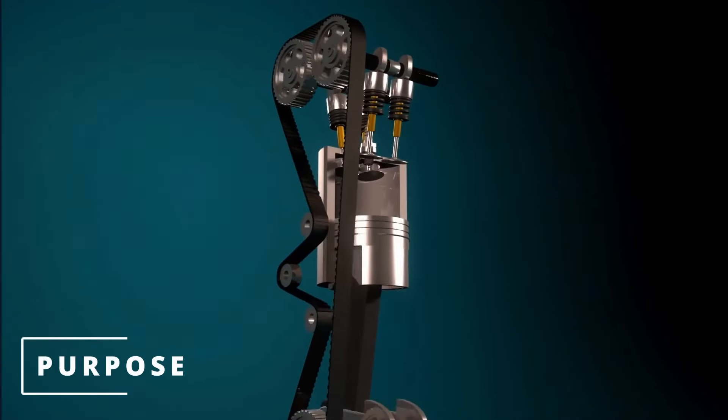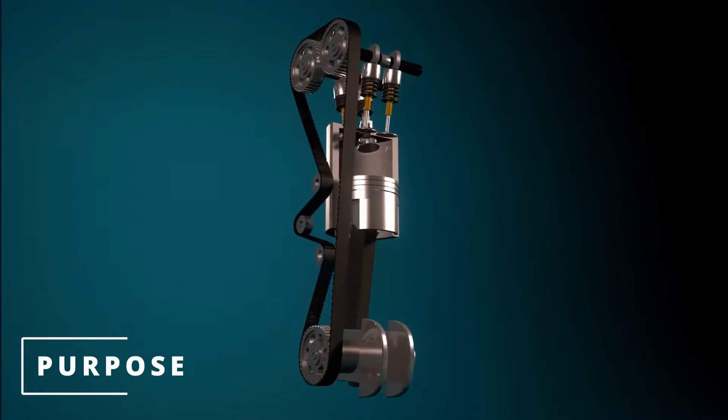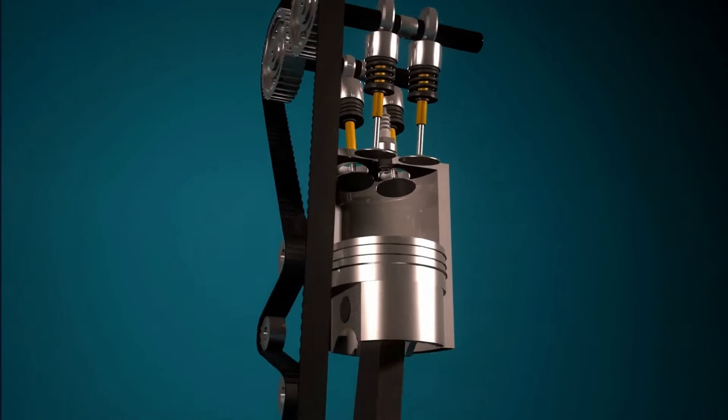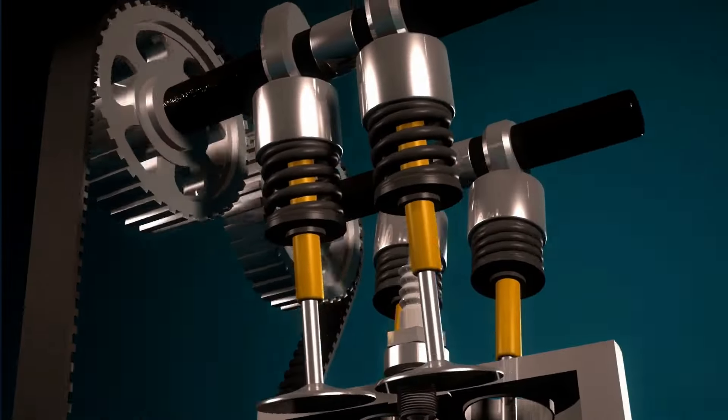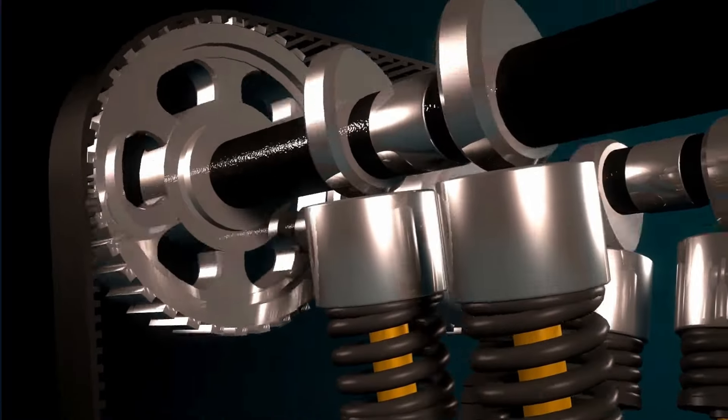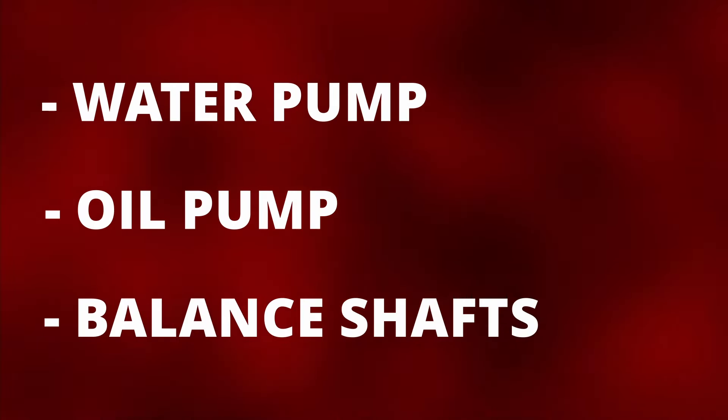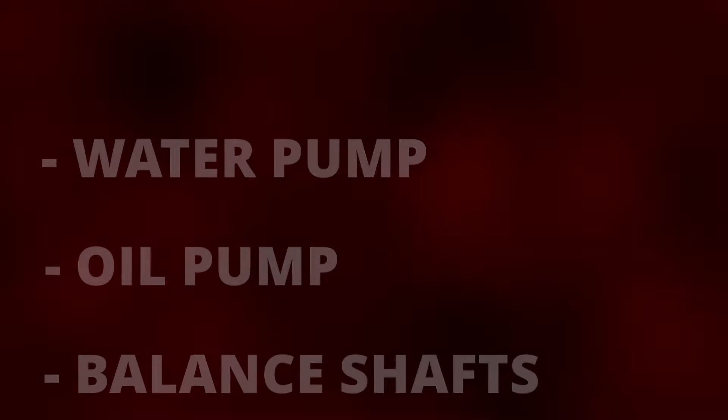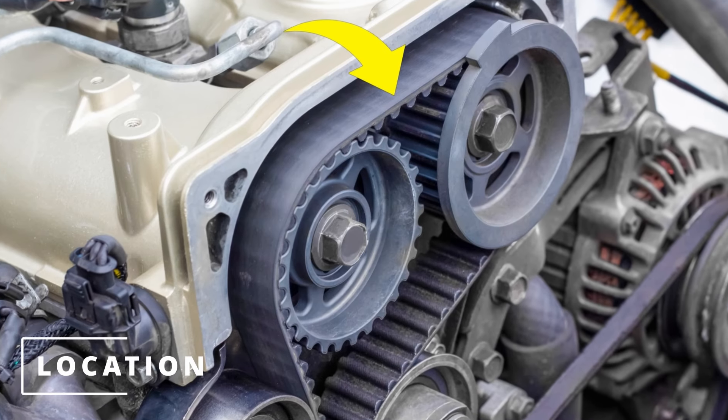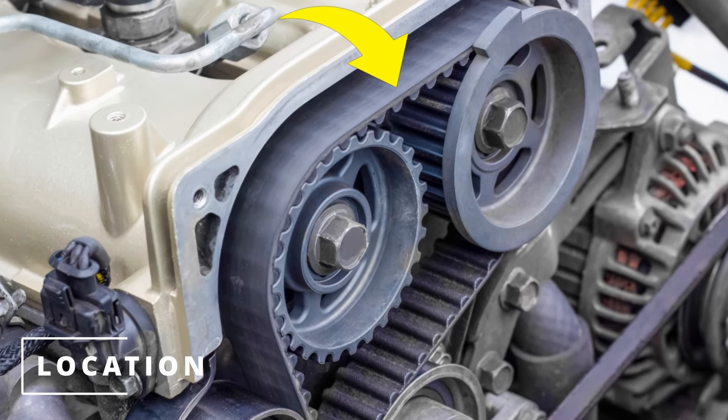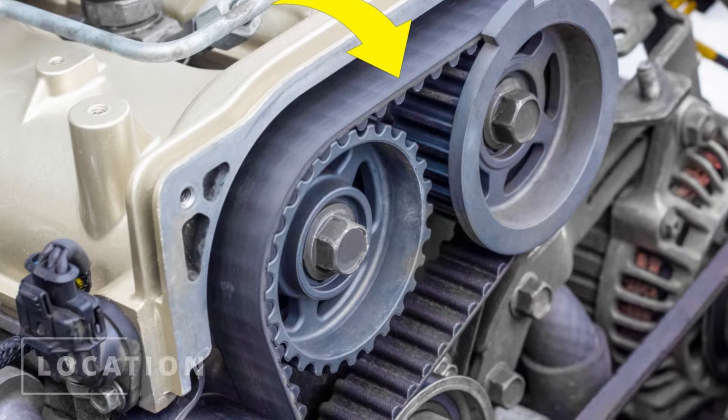The purpose of the timing chain or belt is to keep the camshaft and crankshaft in sequence. This is critical for the engine to run by allowing the camshafts to open the intake and exhaust valves at the correct time depending on the piston's position during the four stroke cycle. In some situations it also drives the water pump, oil pump and balance shafts. The location varies between cars. It's behind the timing cover usually in the front or the left side of the engine.